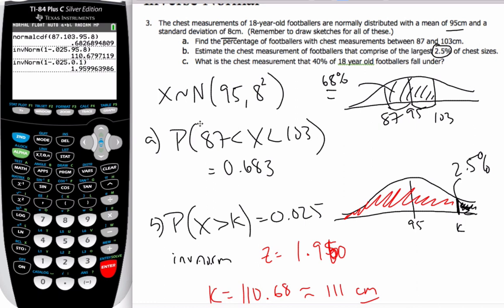And finally, what is the chest measurement that 40% of 18-year-olds fall under? Well, what it means is I have a normal curve. Here's my 95. Here's 40% is this area here, under, fall under. So, this is my 40%.